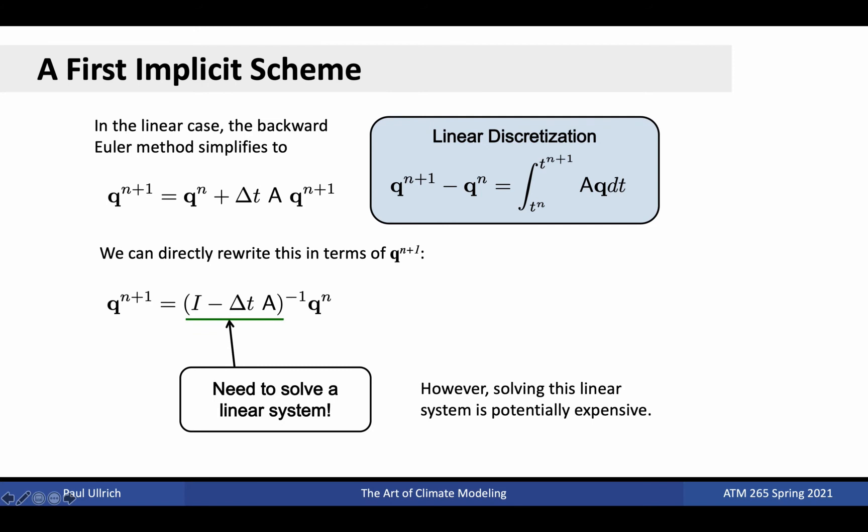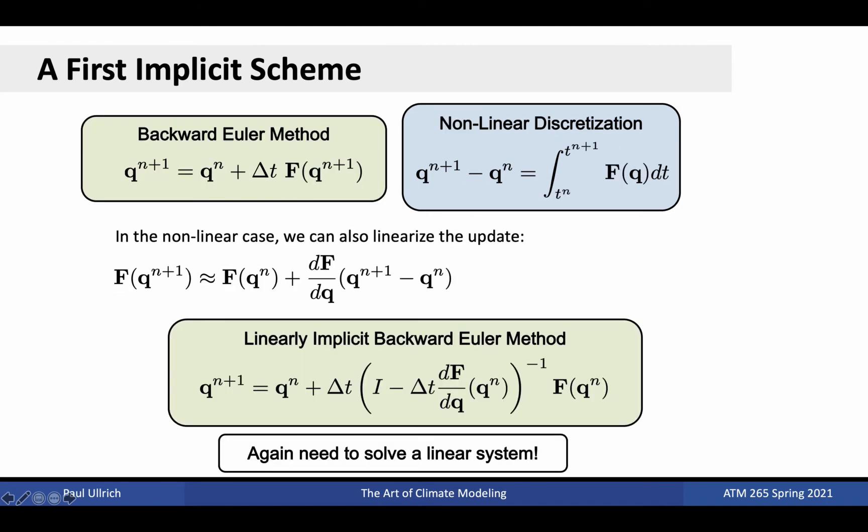If this function was linear, we'd replace f with a times q, yielding the top left equation shown here. Moving all terms with qn plus 1 to the left-hand side and inverting yields the second equation here, which explicitly isolates the unknowns and the knowns. However, solving this system does require the inversion of a linear system using techniques from linear algebra. Although certainly doable, solving a linear system is potentially expensive and does introduce a need for non-local exchange of data.